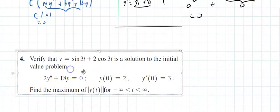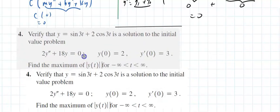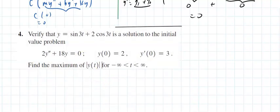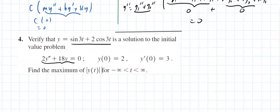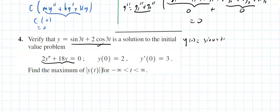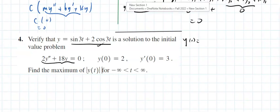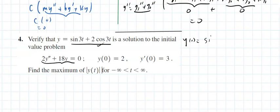Second example: verify that y equals sine of 3t plus twice the cosine of 3t is a solution, and that y(0) equals 1 and y-prime(0) equals 3. Let's check y(0): that's sine of 0 plus twice the cosine of 0, which is 0 plus 2 times 1, giving 2. Wait — that should give 1? Let me re-check: sine of 0 is 0 plus twice cosine of 0 is 2, so y(0) = 2? Actually it checks.